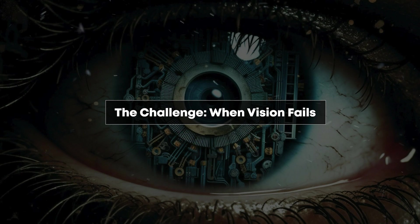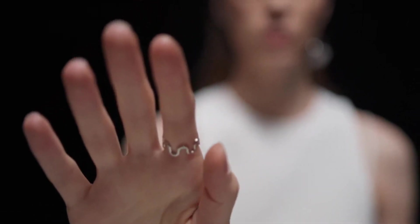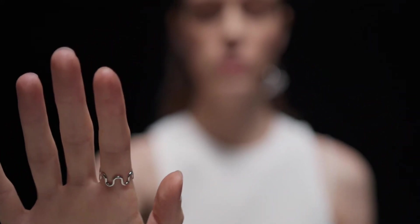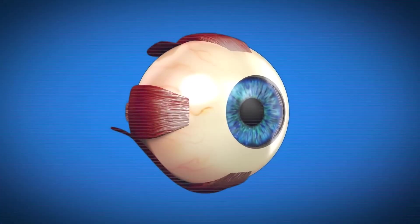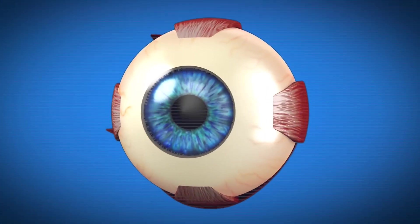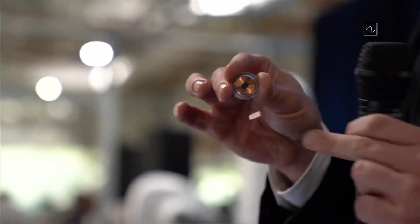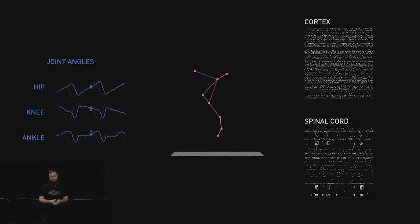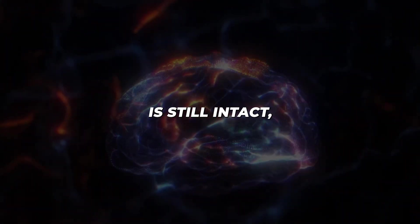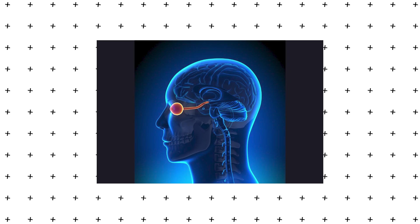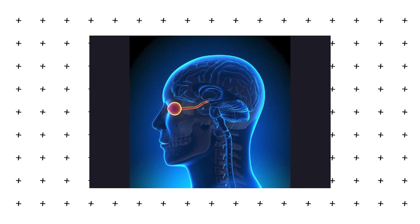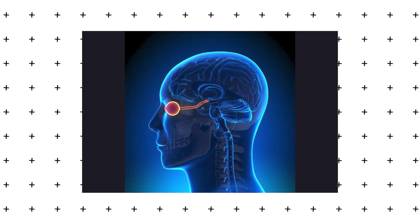The challenge when vision fails. Most cases of blindness aren't due to problems in the brain's visual cortex. Instead, they're caused by issues with the eye itself or the optic nerve. This presents both a challenge and an opportunity for Neuralink. If the visual processing system in the brain is still intact, could we bypass the damaged parts and feed visual information directly into the brain?